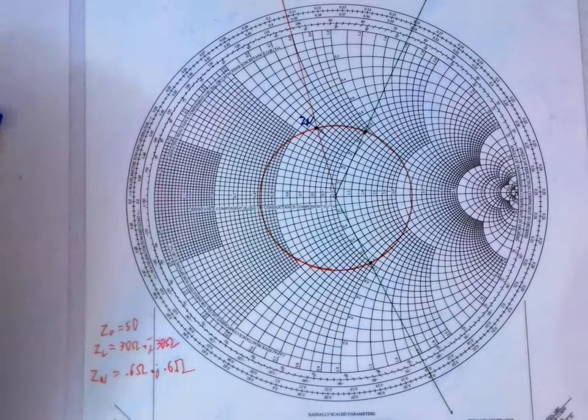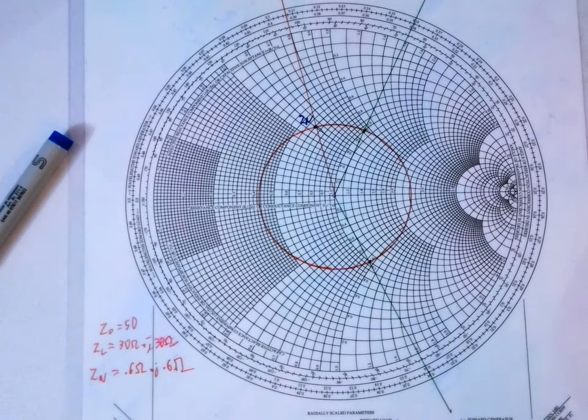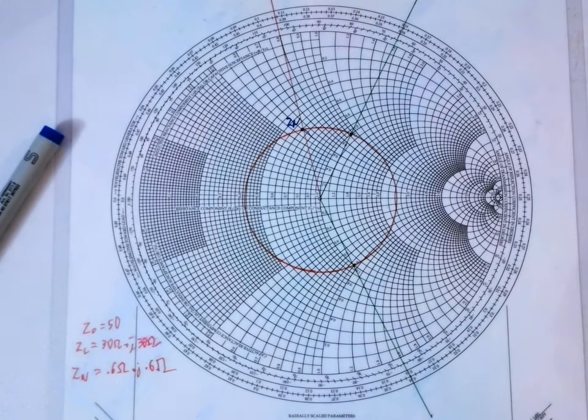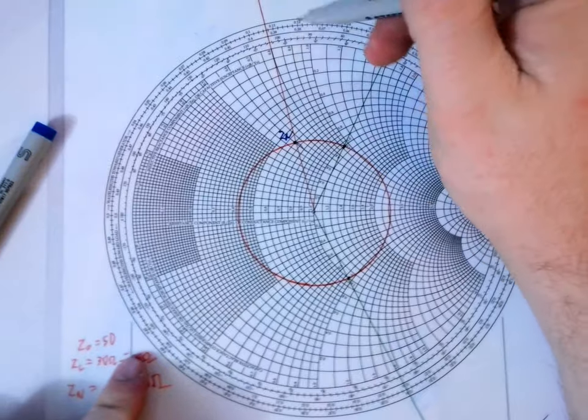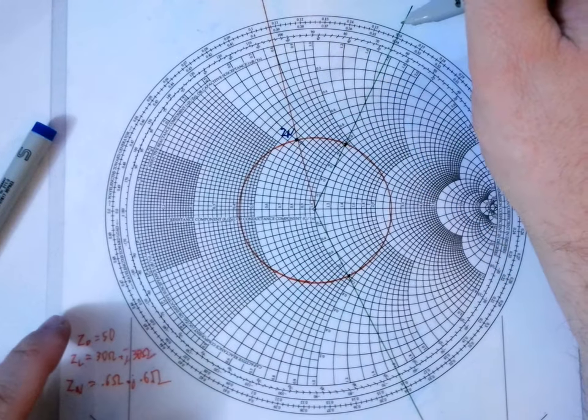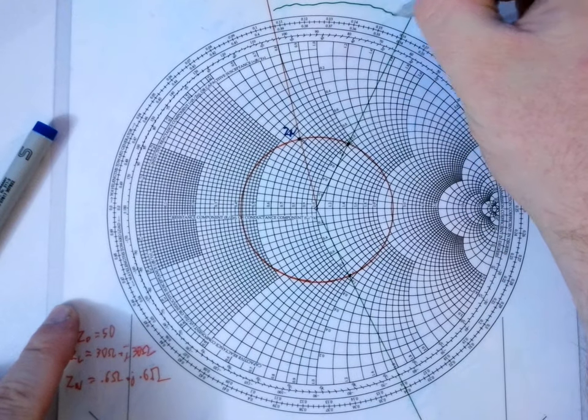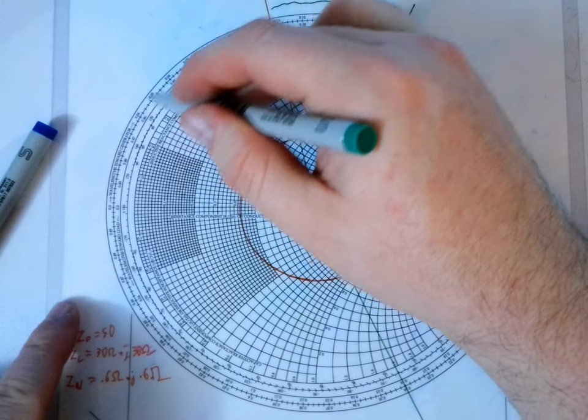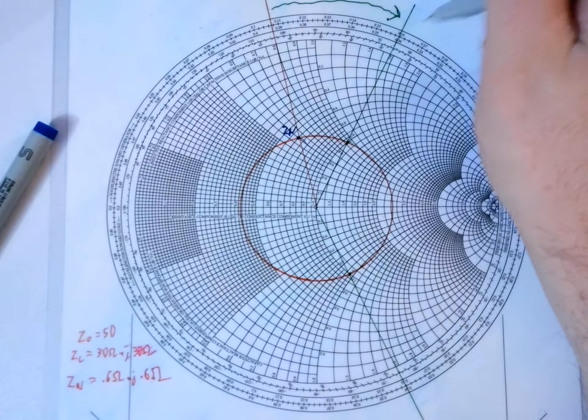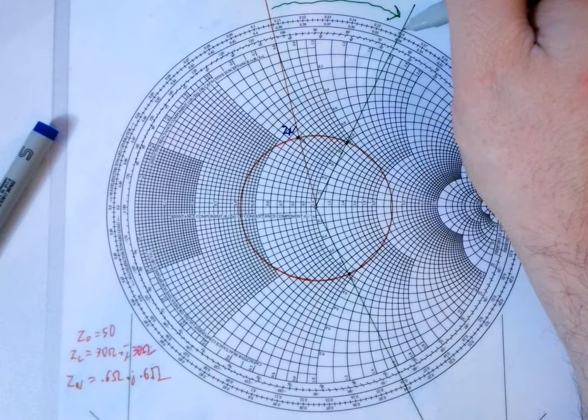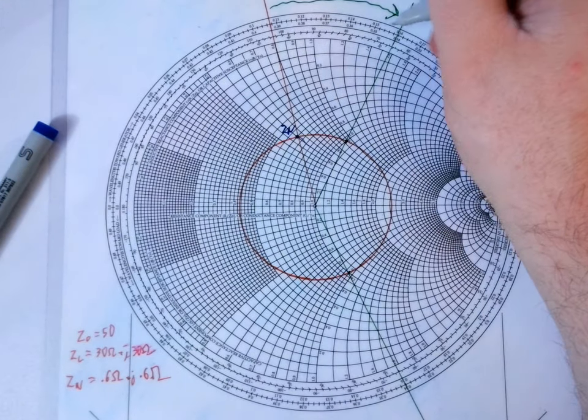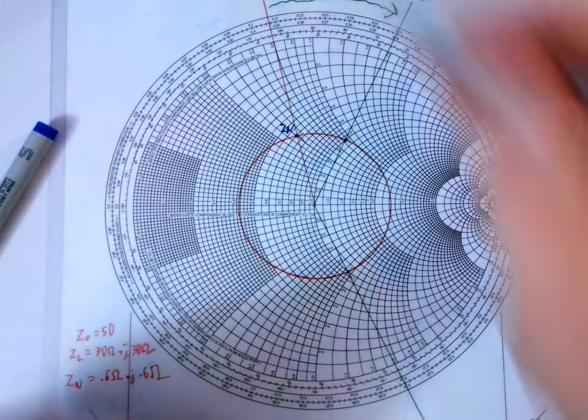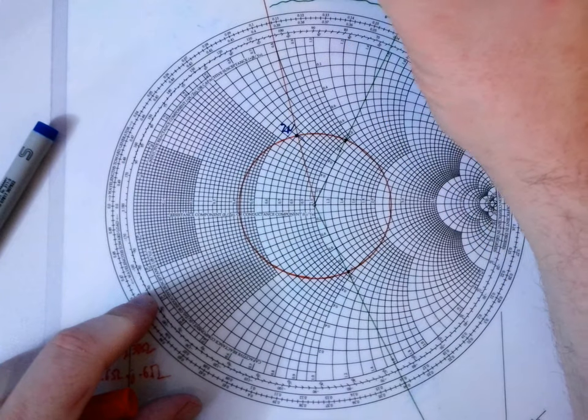And now I need two lines that show where the 50 ohm line, which is this line that goes through the center of the Smith chart, and that intersects with the SWR, which is right here, and right here. Now I'm going to take and draw these two lines out from there. So for series stubbing, we care about the ZN side of that normalized line. To find the distance in wavelengths, we need to go from this line here to the first one of these lines that intersects, which is this one.